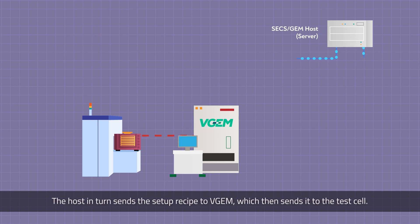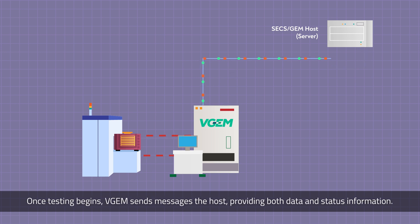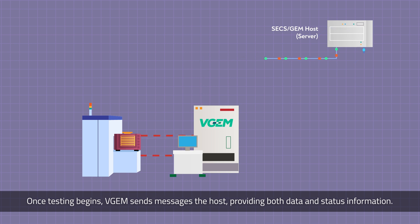The host, in turn, sends the setup recipe to VGEM, which then sends it to the test cell. Once testing begins, VGEM sends messages to the host, providing both data and status information.